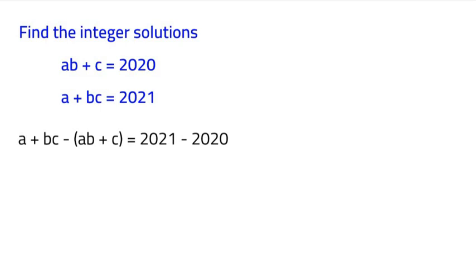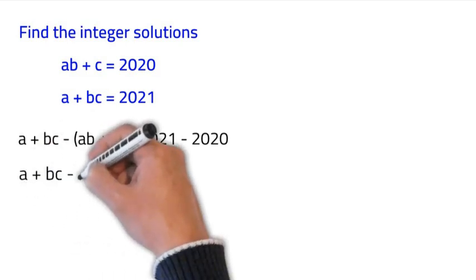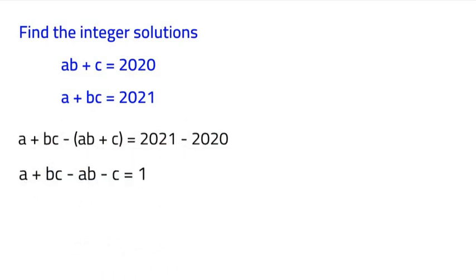Now, we can go ahead and simplify that. What we're left with is A plus BC minus AB minus C is equal to 1.